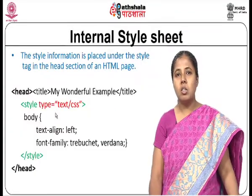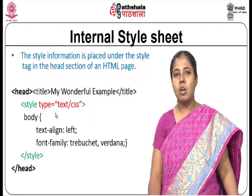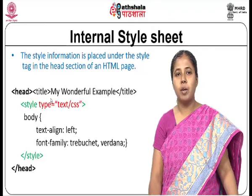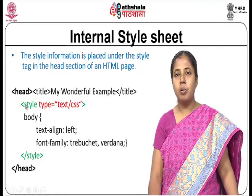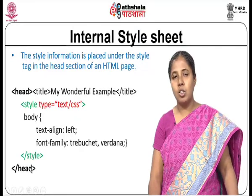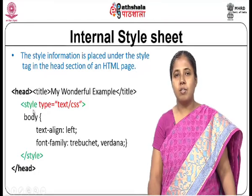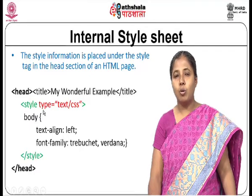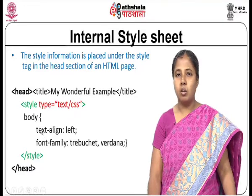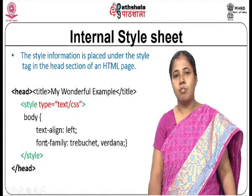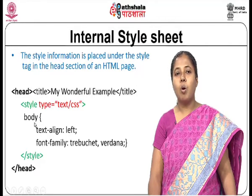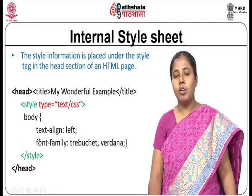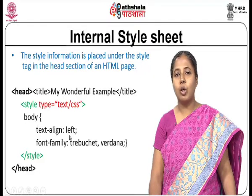For the internal style sheet, the style information is placed under the style tag which comes in the head section of an HTML page. Within the head section you use the style element with an attribute called type — you give it as text/css — within which you give your properties and values. For example, you can specify that the entire body is formatted with text-align: left and font-family: Verdana.